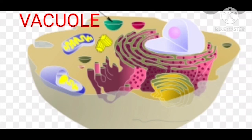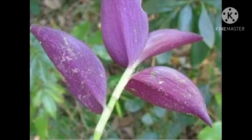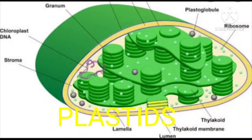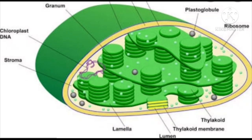You might notice several small colored bodies in the cytoplasm of the cells of a Tradescantia leaf, scattered in the cytoplasm. These are called plastids. They are of different colors. Some contain a green pigment called chlorophyll — green-colored plastids are called chloroplasts, which provide green color to the leaves. Chlorophyll in the chloroplasts of leaves is essential for photosynthesis.